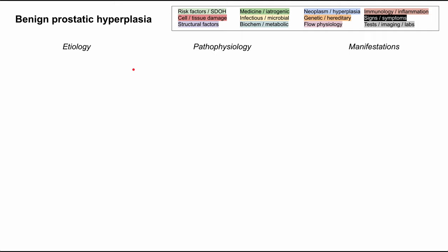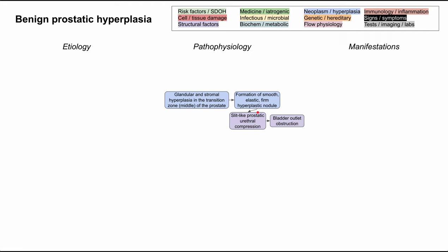We'll start with the pathophysiology of benign prostatic hyperplasia. It all begins with glandular and stromal hyperplasia in the transition zone of the prostate. The transition zone is in the middle of the gland, and the urethra in men goes through the prostate, so the transition zone is really surrounding the urethra. When you have glandular and stromal hyperplasia, it leads to the formation of a smooth, elastic, and firm hyperplastic nodule, which then compresses the urethra.